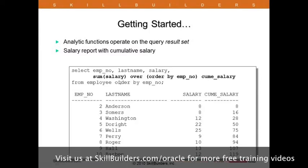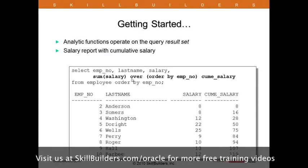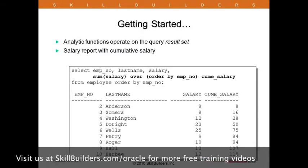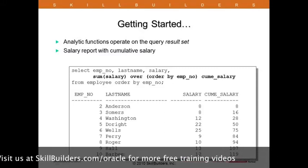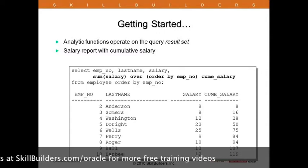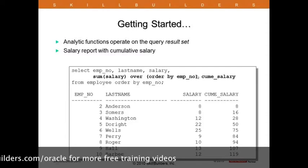So what we do is we say sum the salary over order by emp_no. The order by tells us what the sorted order is going to be. This order by in the analytic function should be the same generally as the order by in the actual SQL command. And then notice what happens. Cumulative salary is 8, 8 plus 8 is 16, plus 12 more is 28. This gives you running totals.